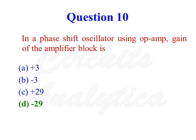In a phase shift oscillator using an op-amp, the gain of the amplifier block is minus 29. So the correct answer is the last option, minus 29.